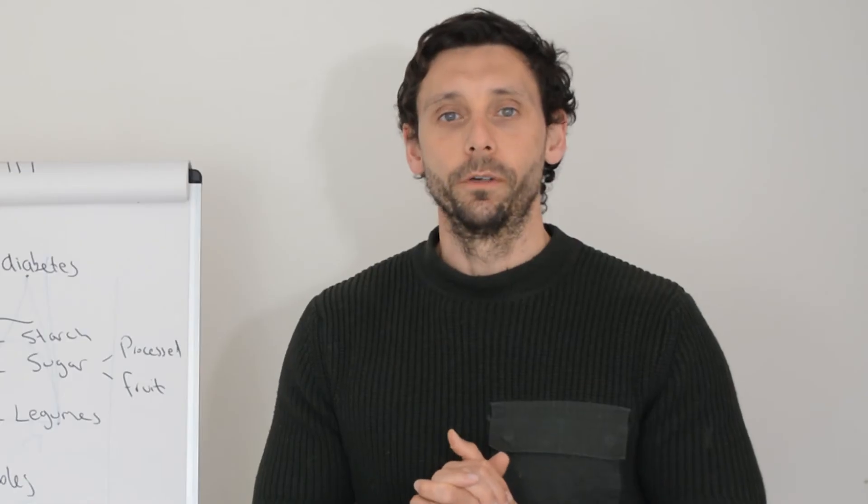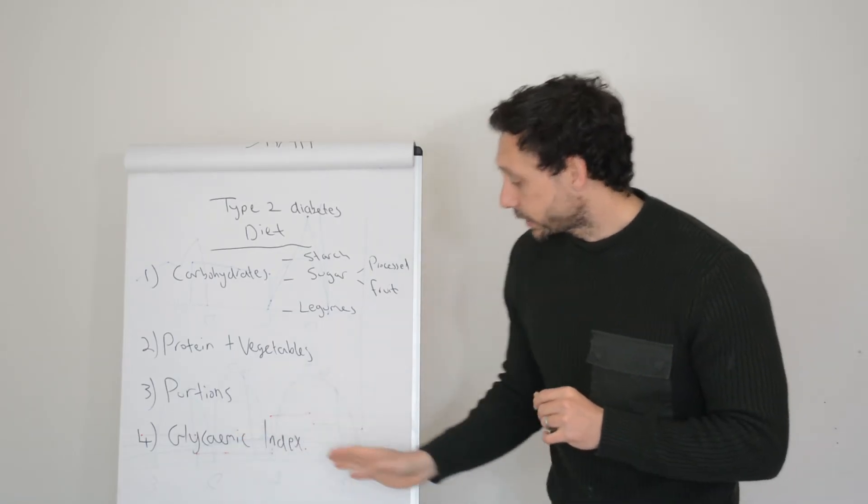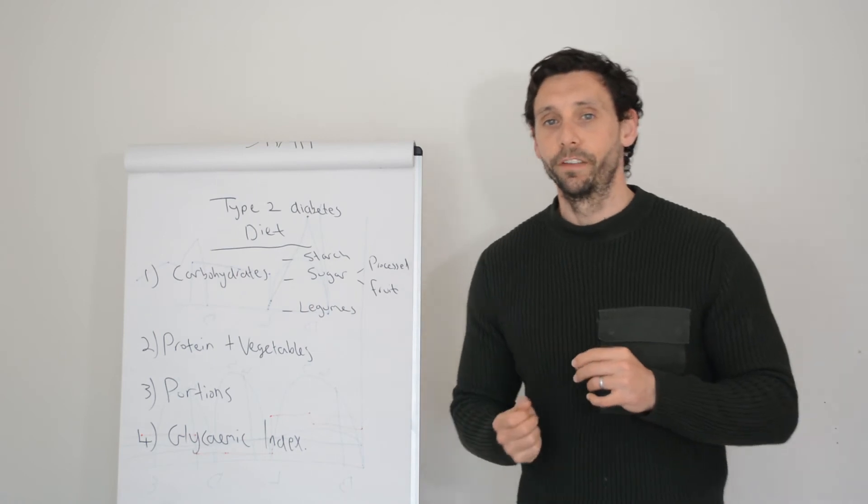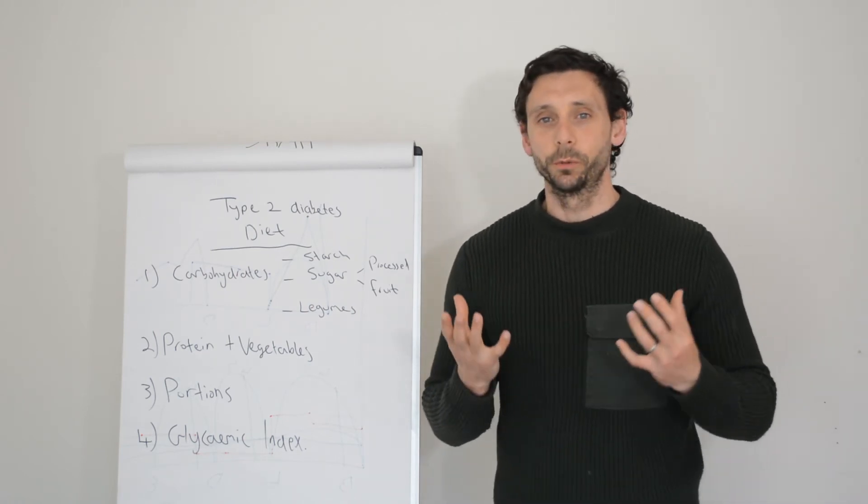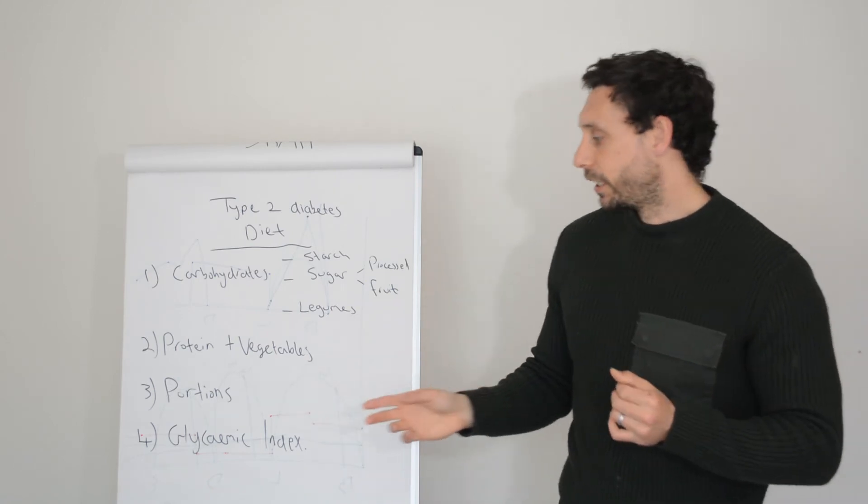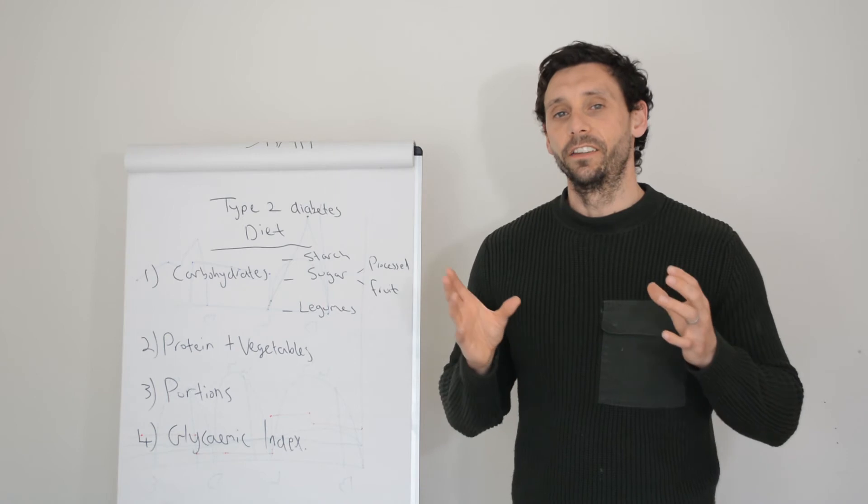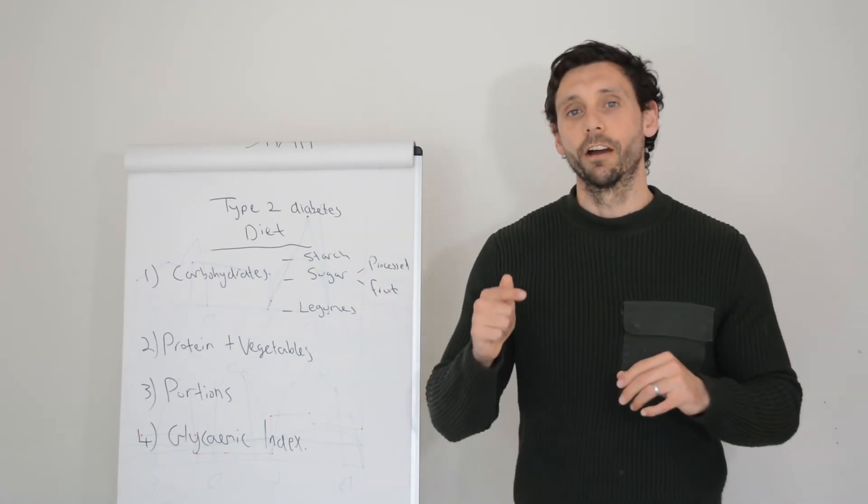Number four: glycemic index. Number four on the list is this thing called the glycemic index. You've probably heard of it or appreciate the principle to some extent. I'm sure you've encountered it somewhere along your diabetes journey. The glycemic index, or the GI, just talks about how quickly the carbohydrate-containing foods are absorbed in your body when you eat them.